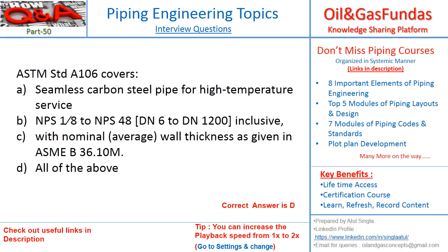The correct answer is D — all of the above. ASTM A106 is a material standard covering seamless carbon steel pipe only for high temperature services. The size range covered is 1/8 to 48 inch. All wall thickness, average, and nominal size details are as given in ASME 36.10, so all three statements are correct.